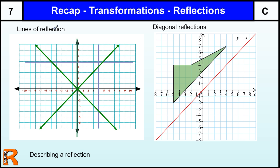To start with, reflections on coordinate grids are all about lines, equations of lines. You need to know the equations of the basic lines so that you can describe a reflection, or if you're asked to do a reflection in a particular line, you know which one you're talking about. I've got three types of lines here.